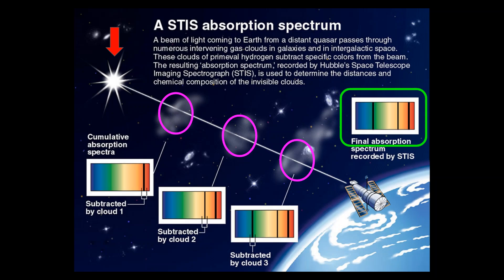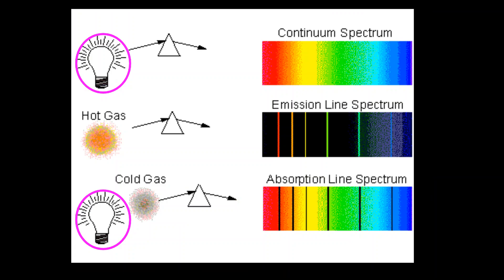This can happen in the atmosphere of a star, or it can happen over a great distance with light traveling through space through gas clouds. In the end, these cool gases subtract the light from what we see coming from a distant star or galaxy. Let's take a closer look at this.